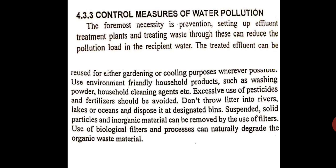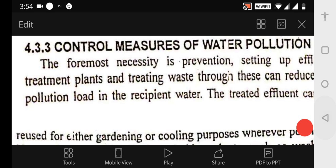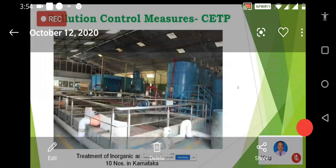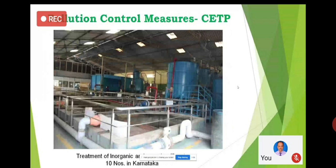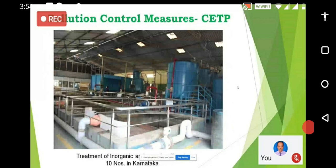Now let us look at control measures for water pollution. The foremost necessity for prevention is the setting up of effluent treatment plants (ETP). Treating waste through these plants can reduce the pollution load on the recipient water. There are two types of treatment plants: the ETP (Effluent Treatment Plant) used by industries, and the STP (Sewage Treatment Plant) used by municipal bodies. Both treat and neutralize the water, improve oxygen levels through aeration, and reduce damaging effects before releasing the water. The treated water is mostly recycled for non-potable uses like bathrooms and gardens.